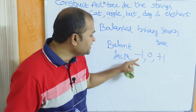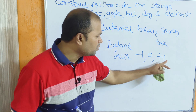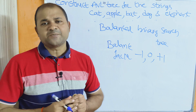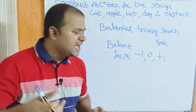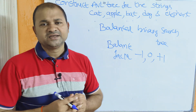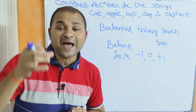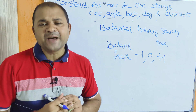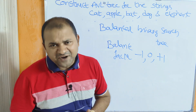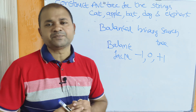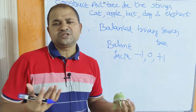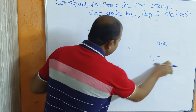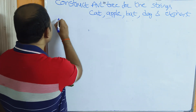If the balance factor of a node is -1, 0, or +1, then that node is a balanced node. If the balance factor is other than -1, 0, or +1, the node is unbalanced and the tree is an unbalanced tree. If the tree is unbalanced, we convert it to a balanced tree by performing the corresponding rotation. We have four types of rotations: LL, RR, LR, and RL.